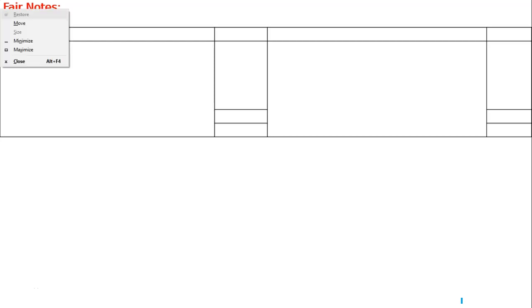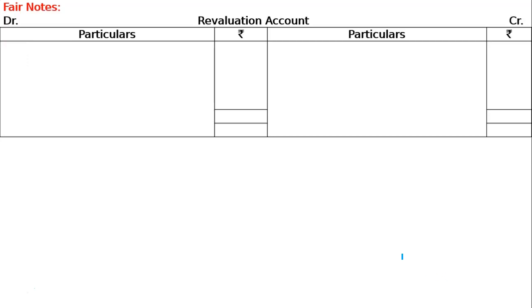Now prepare the revaluation account, partners' capital accounts, and balance sheet. In the revaluation account, first record the workman compensation liability — since there is no workman compensation fund, a workman compensation liability of 40,000 arises.